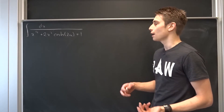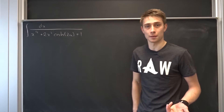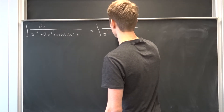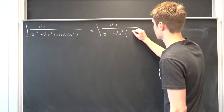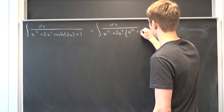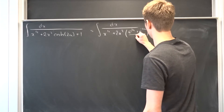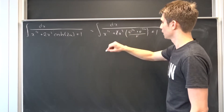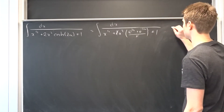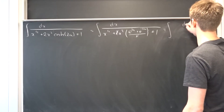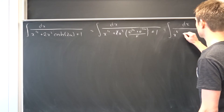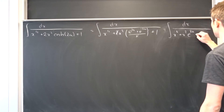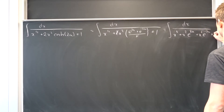What could we do first? We could plug in the definition of the hyperbolic cosine. So that's just the integral of dx over x to the fourth power plus 2x squared times e to the 2a plus e to the minus 2a over 2 plus 1. As you might notice, if we distribute this, those twos cancel out. So what we end up with is just the integral of dx over x to the fourth power plus x squared times e to the 2a plus x squared times e to the minus 2a plus 1.